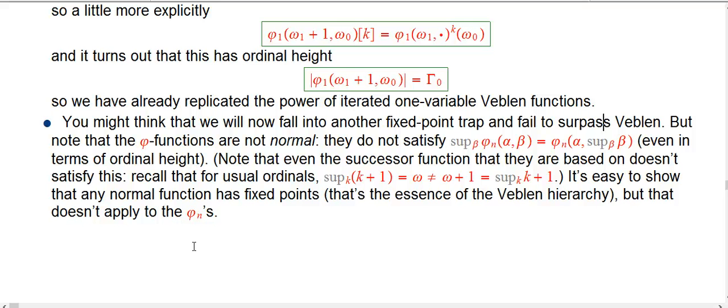You might think there's another fixed point trap, because after all this is something where the one-variable Veblen function just fails to give anything new. You have to artificially get it out of the fixed point trap and go on, and then that leads eventually to the OCF idea.